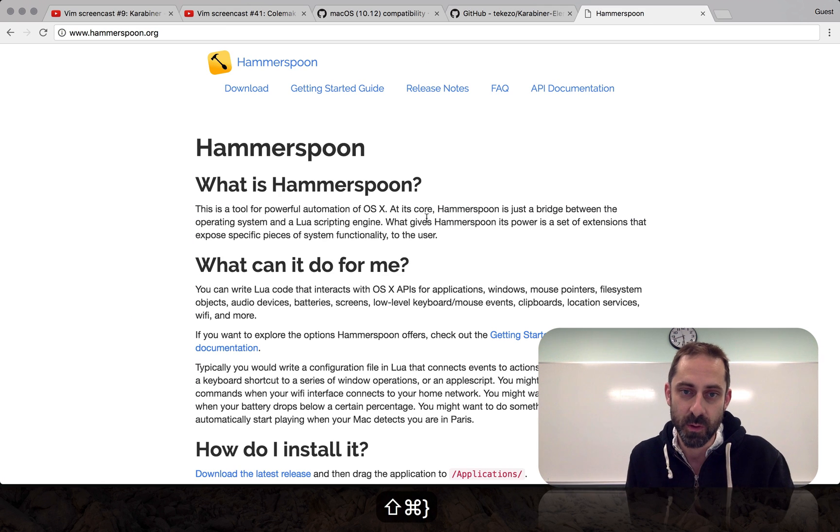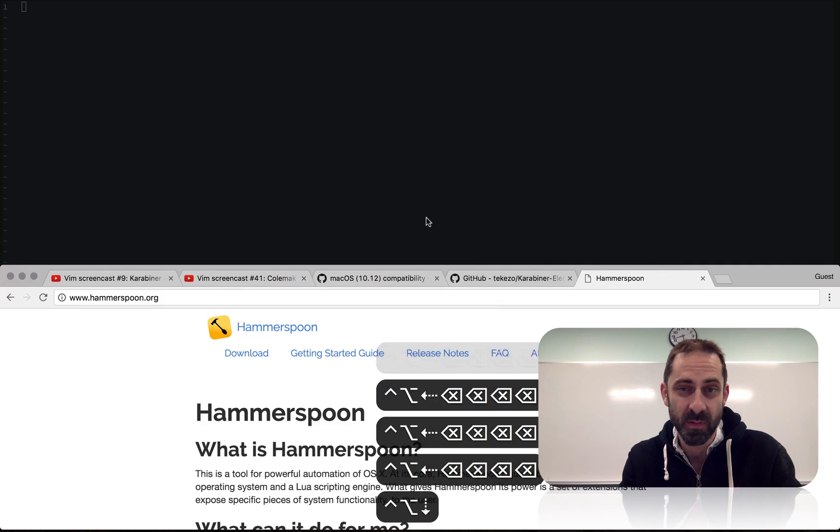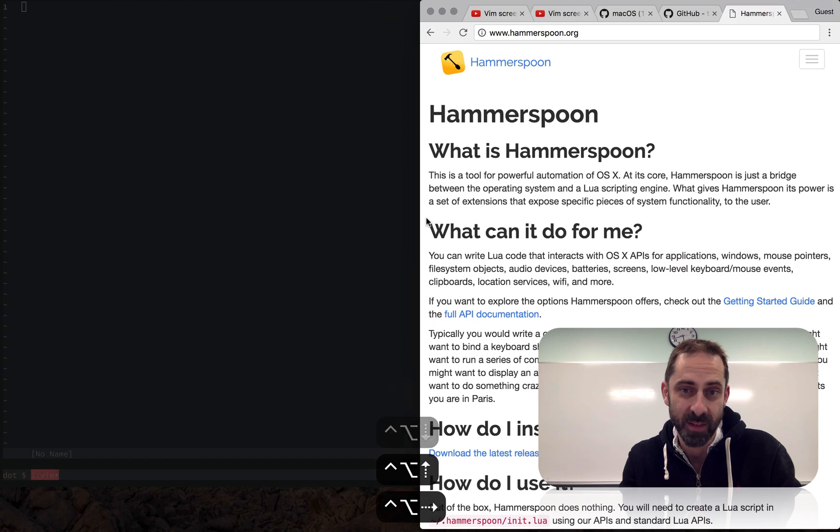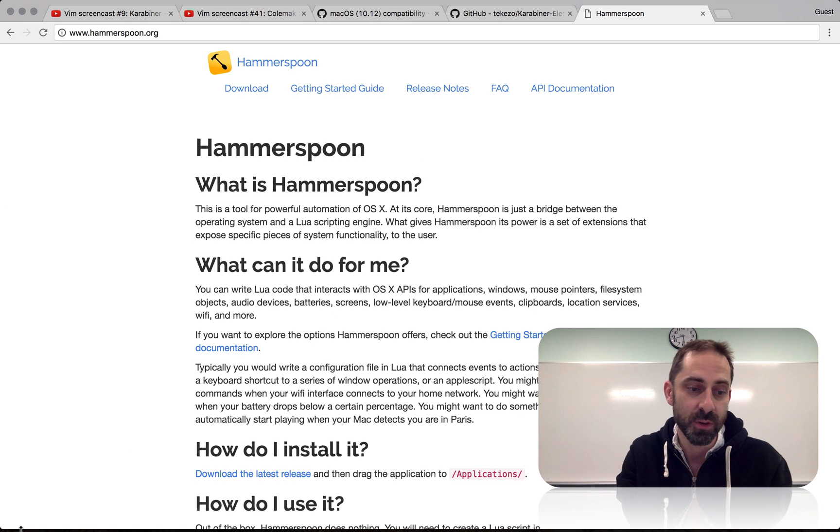how I've used a tool called Hammerspoon to recreate the parts of Karabiner that I really can't live without on Sierra. Hammerspoon probably deserves a screencast of its own. I originally got into it as a replacement for a tool called Slate which allowed me to move the windows around on the keyboard like that.